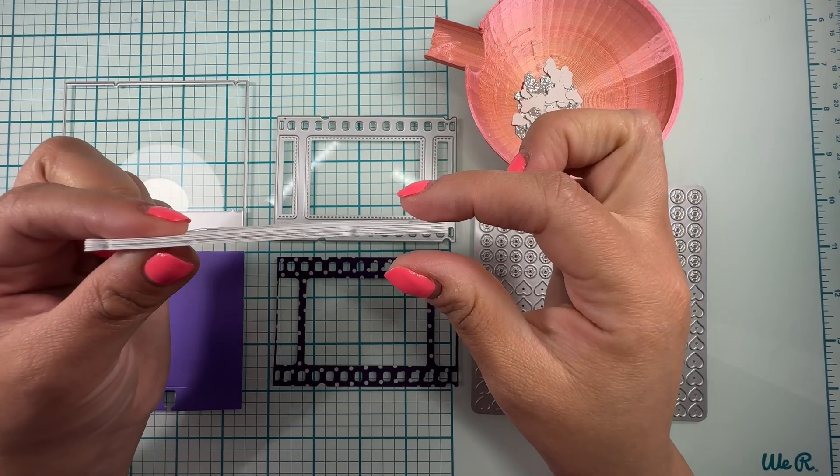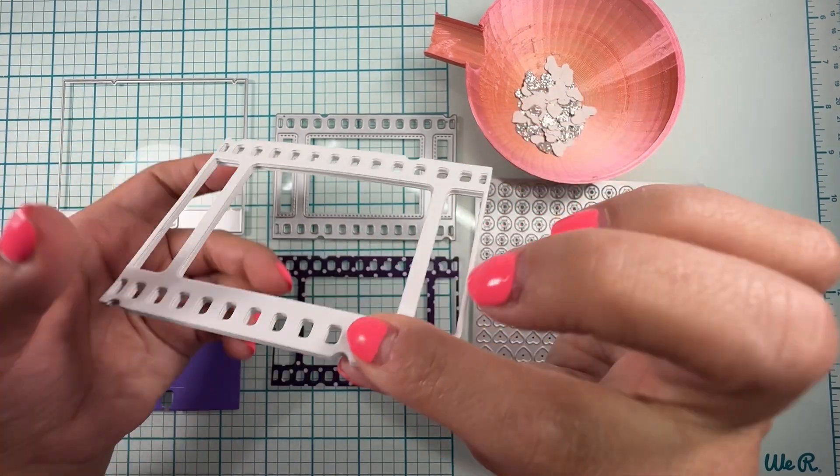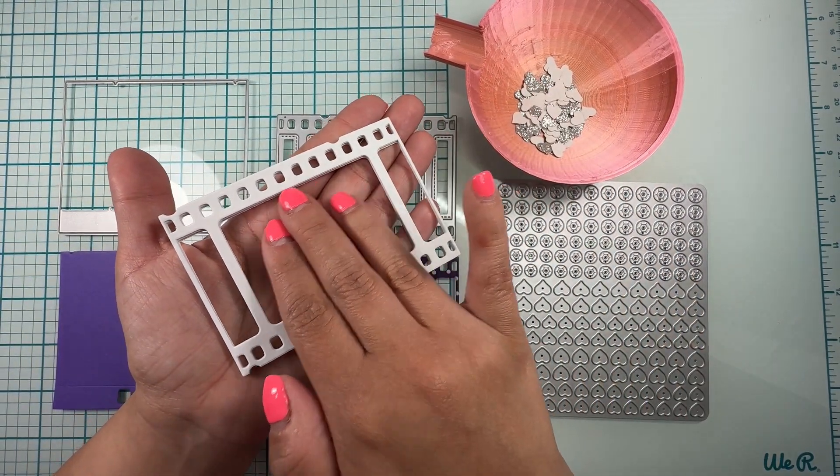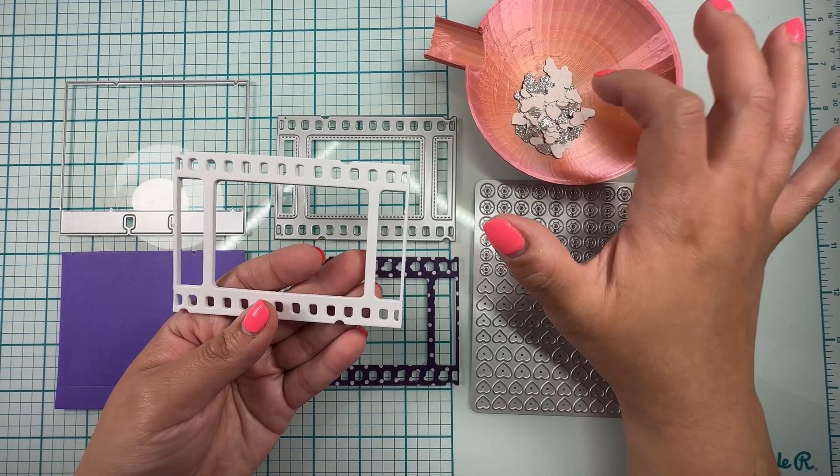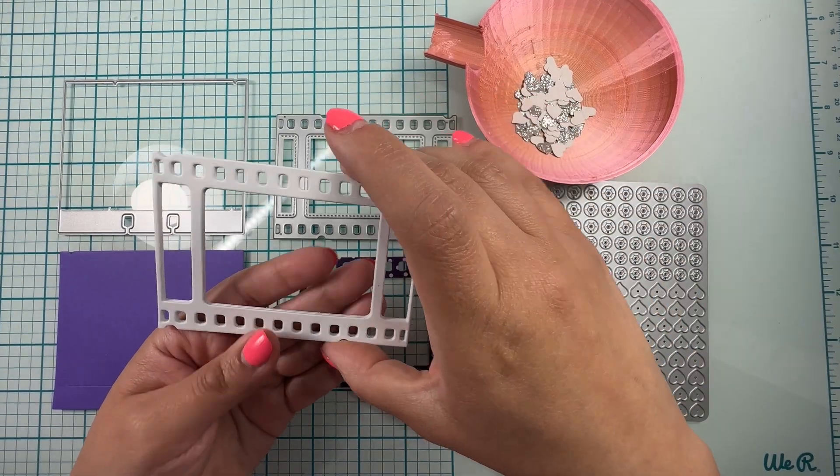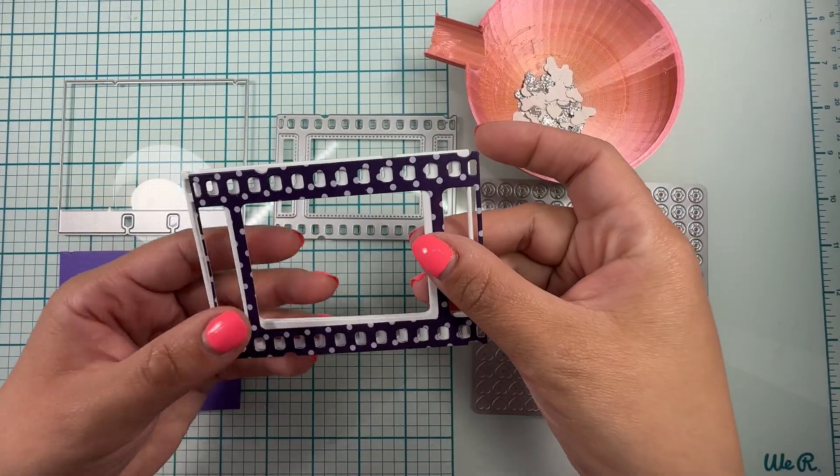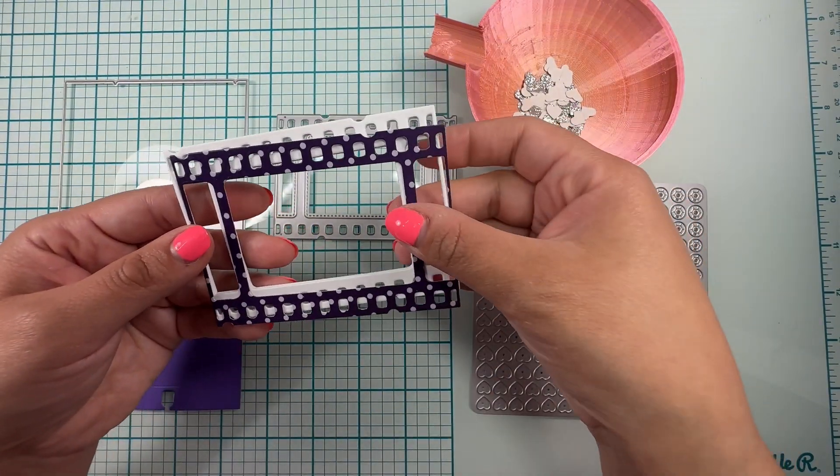That's gonna allow to have some space there for my sequins to move around. So what we're gonna do - and this piece is to put on top - like so. Like this.